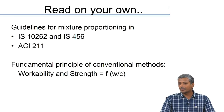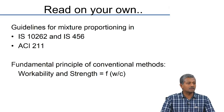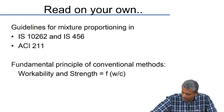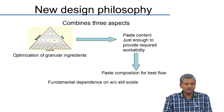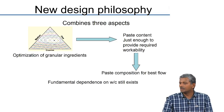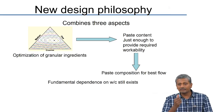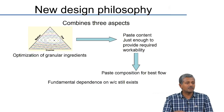What we will try to do is optimize the contents of your concrete in such a way that we can maximize the packing of the ingredients and minimize the amount of paste required to produce the concrete. The modern philosophy of mix design combines three major aspects. One is optimization of the granular ingredients — meaning your aggregates as well as your cementitious combinations. For example, if you are using mineral additives as a replacement for cement, how to optimize these constituents to get the best packing.